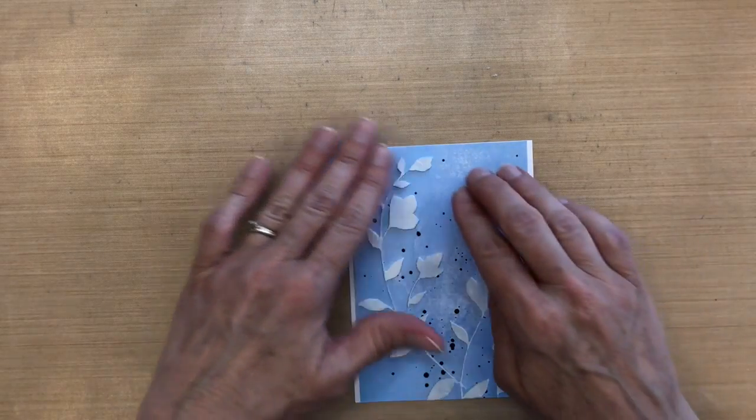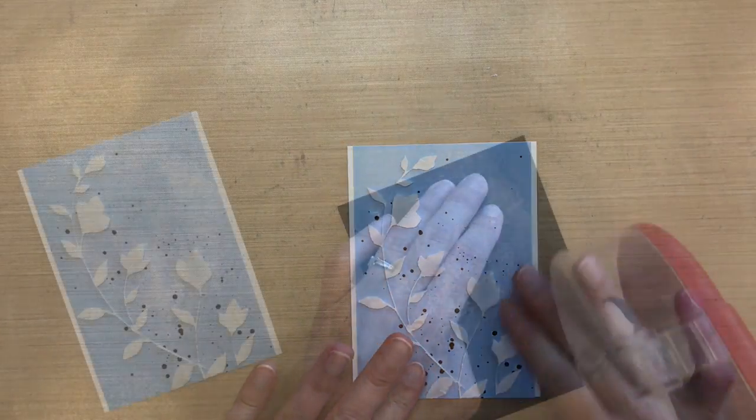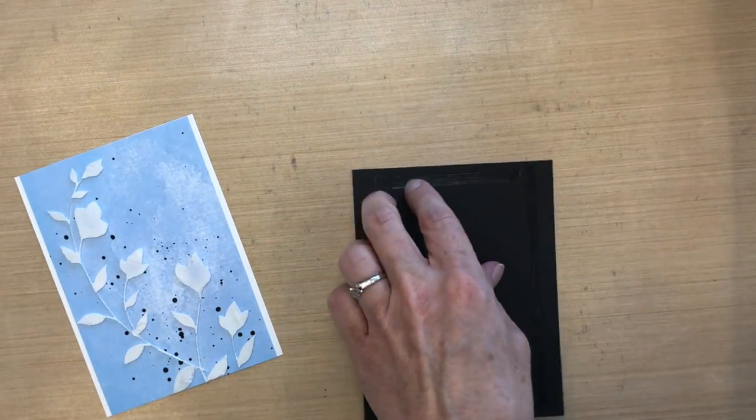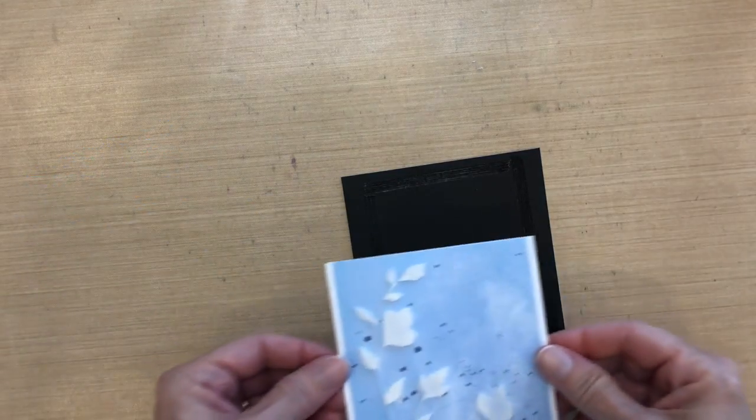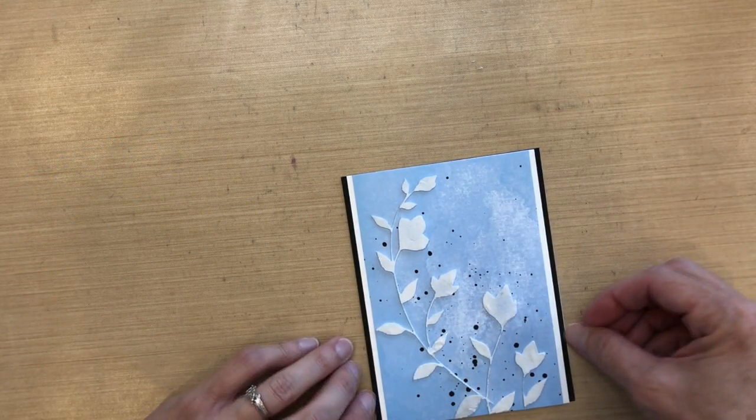It's a one-eighth inch mat on the right and the left side. I'm going to center it on that, and then I'm going to put some ATG tape runner on my Hero Arts note card, which is black on the outside, white on the inside. Then I'll adhere it to this, so I have an additional eighth of an inch mat on either side.